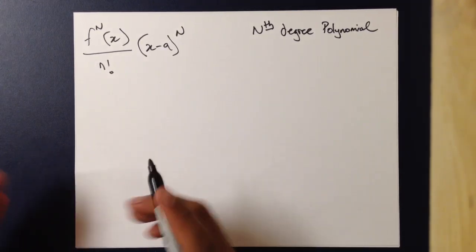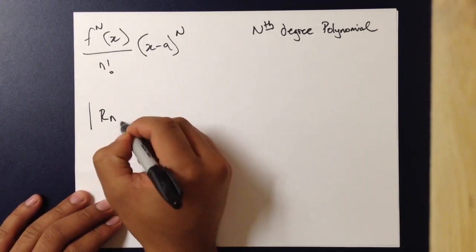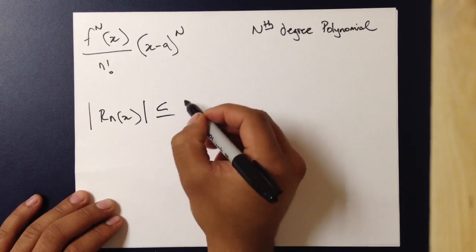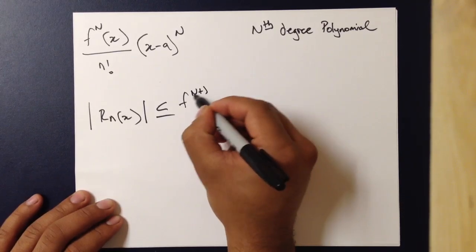And what the formula he came up with was that the remainder, or the max error, is less than or equal to the next term in the Taylor polynomial.